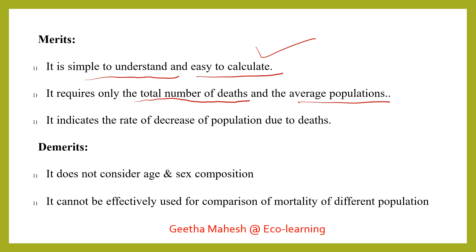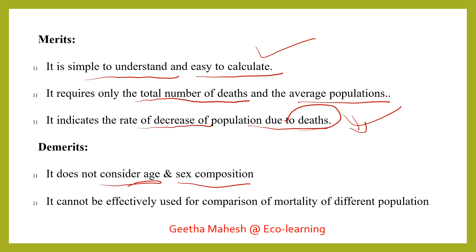It indicates the rate of decrease of population due to deaths. As for demerits, crude death rate does not consider age and sex composition.